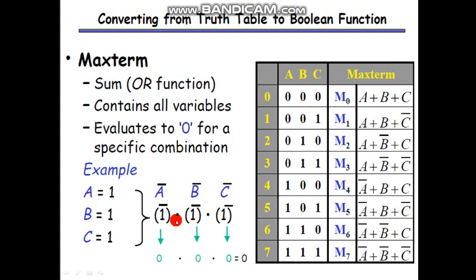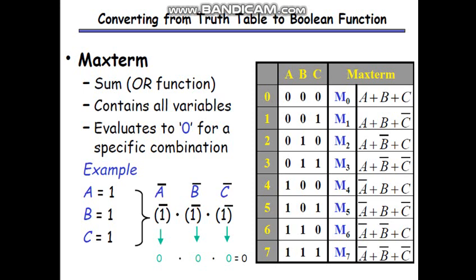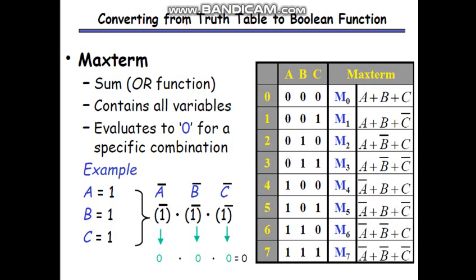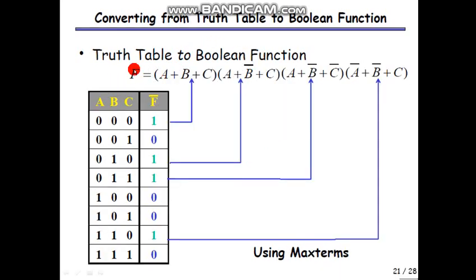There are two key terms: minterm and maxterm. In SOP (Sum of Products), minterms are used; in POS (Product of Sums), maxterms are used. A minterm is denoted when the output is zero and uses an AND operation; a maxterm is denoted when the output is one and uses an OR operation. The Product of Sums operation is called POS.